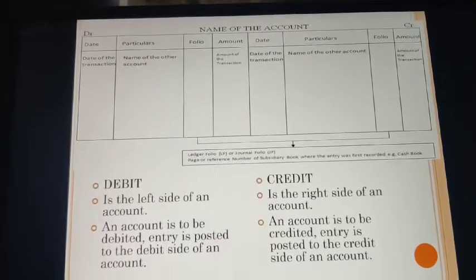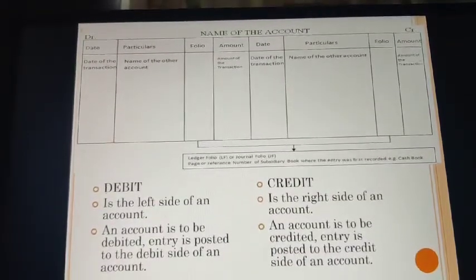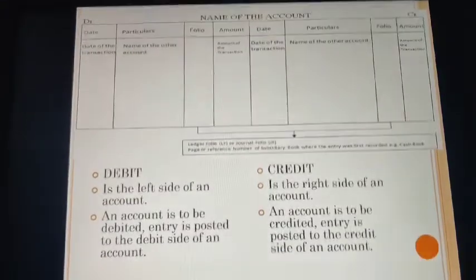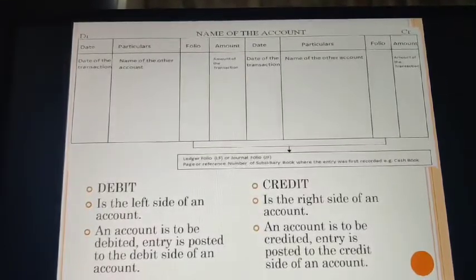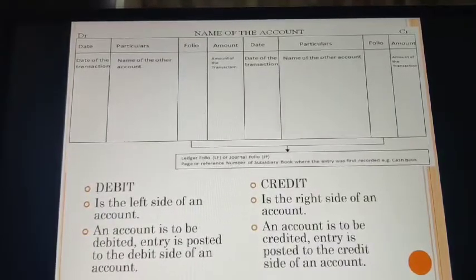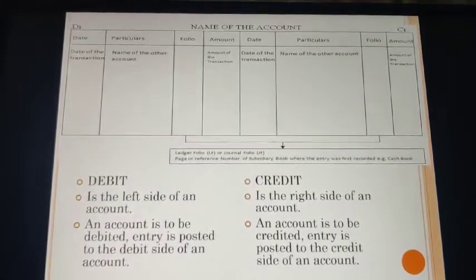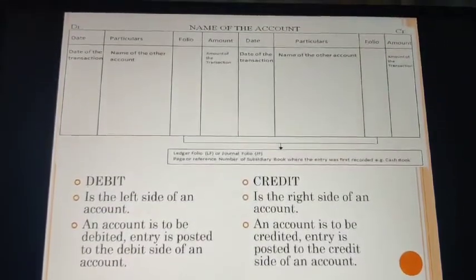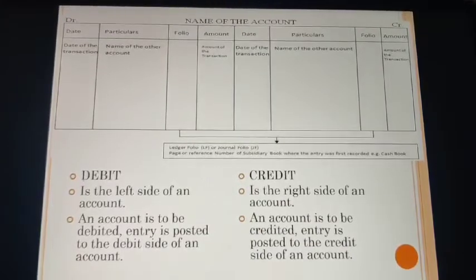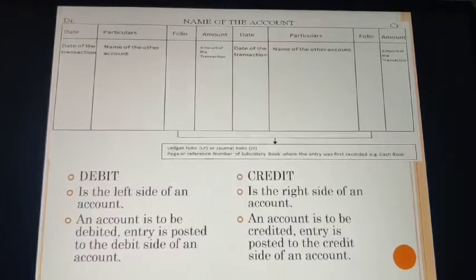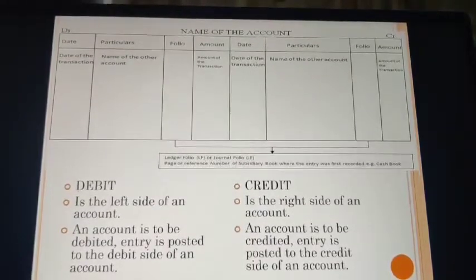If we have a machinery account and at a particular date we are writing it off, the other account will be posted just once — we cannot record one entry on both the debit side and the credit side. The ledger folio or journal folio represents the page or reference number of the subsidiary book where the entry was first recorded. For example, if machinery was purchased on cash, and you are recording cash account under the name of the other account, you will write the page number in the folio section.